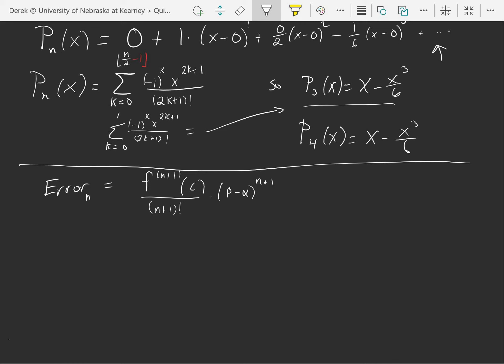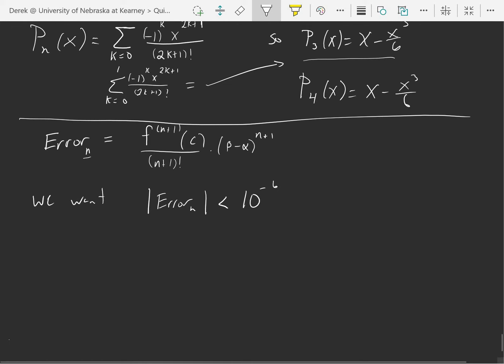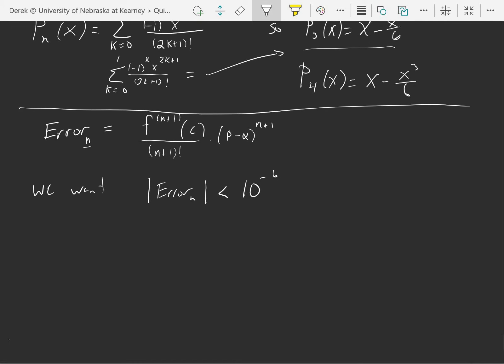Okay, so how far am I going to have to go out? What n will I have to use to get an approximation within 10 to the negative 6th? We want the error less than 10 to the negative 6th.